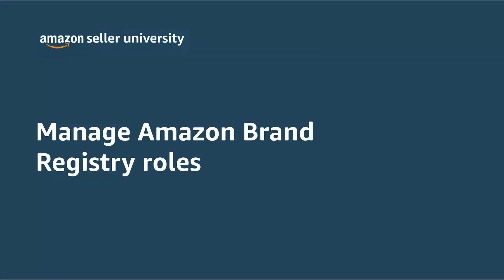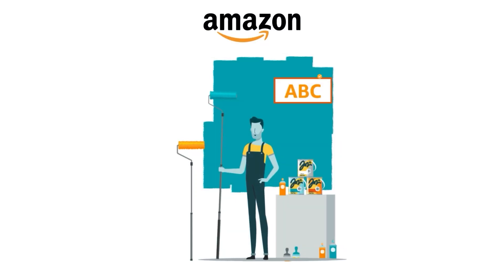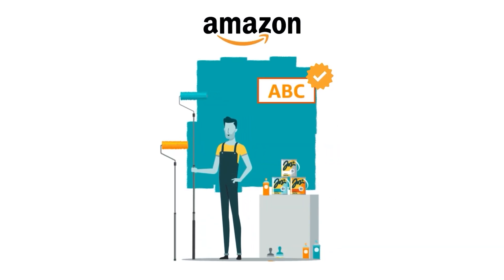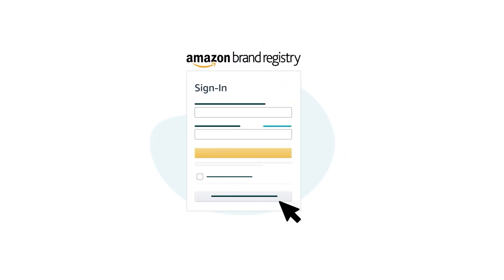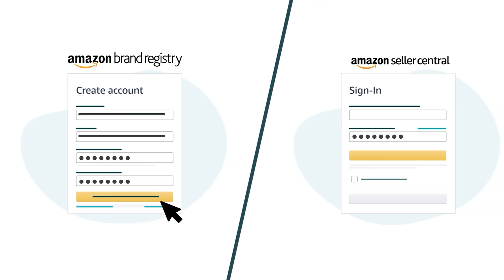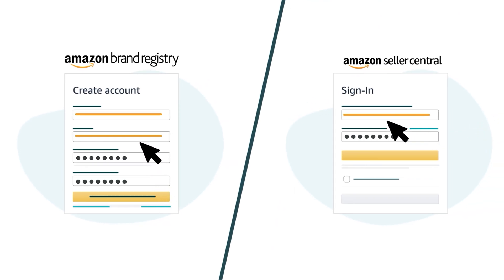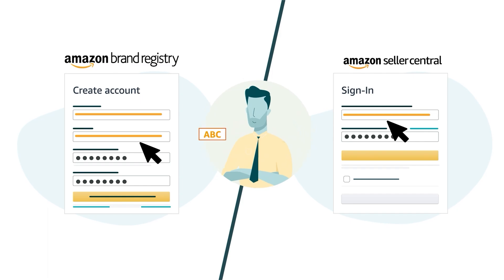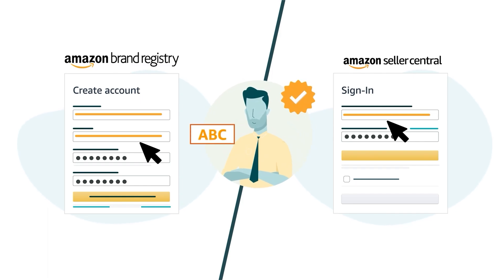Welcome to our video, Manage Amazon Brand Registry Roles. When a seller wants to enroll their brand with Amazon, they start by creating an Amazon Brand Registry account if they don't already have one. They should create that account with the same credentials they use to sign in to Seller Central. That ensures they'll have full access for the brand when they sign in to either portal.